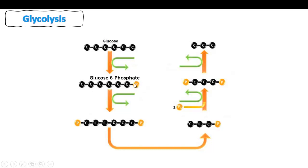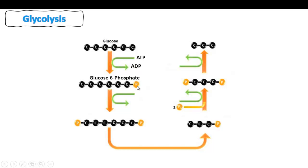This new molecule is called glucose-6-phosphate, meaning that this phosphate is bound to the sixth carbon atom — carbon one, two, three, four, five, six. The question is: where does that phosphate come from? The answer is from ATP. ATP is converted into ADP plus a phosphate, and that phosphate released from this hydrolysis reaction binds to the sixth carbon of the glucose.